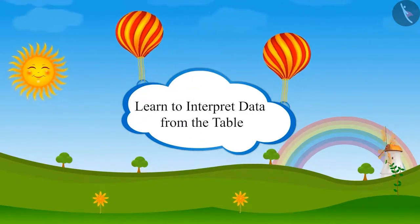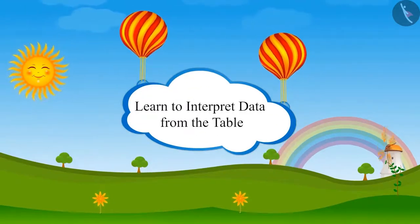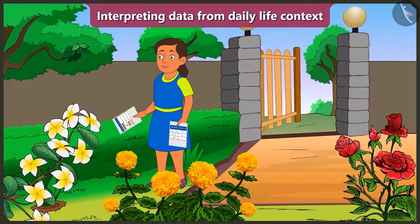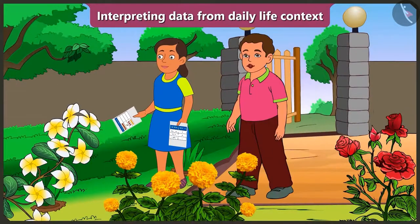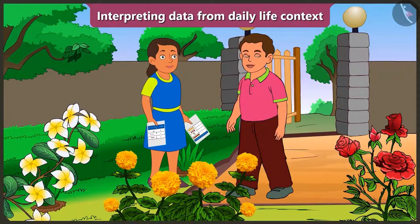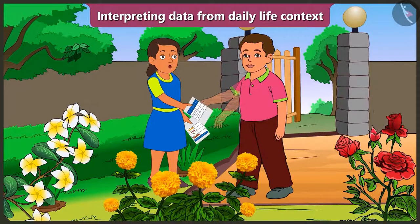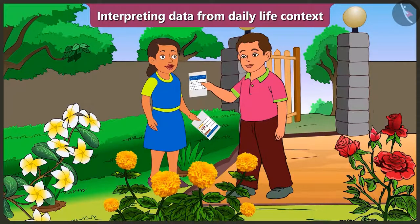Hey Bubbly, what are you doing in the garden? Mummy has prepared this table and given it to me. There are different flowers in the garden. I am counting the blossomed flowers to find out how many flowers have blossomed.